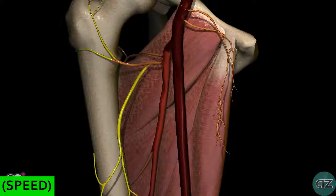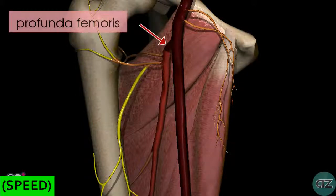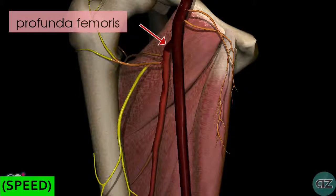Moving further down, there are several branches given off in the thigh. You've got the deep artery of the thigh, which is called the profunda femoris artery, and you can see that here. This artery is the main supply to the adductor, the extensor, and the flexor muscles of the thigh.